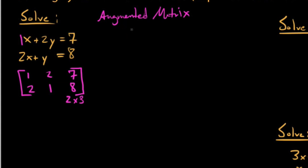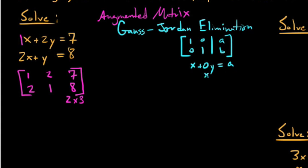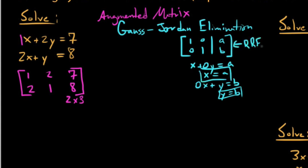We want to use what we refer to as Gauss-Jordan elimination. Gauss-Jordan elimination has one intent: to make our matrix look like 1s down the main diagonal — as far as we can get them in echelon form — and then 0s above and below them. Rewriting the corresponding system, we'd say x equals A and y equals B, giving us the solution. We want this in what we call reduced row echelon form, often abbreviated RREF.